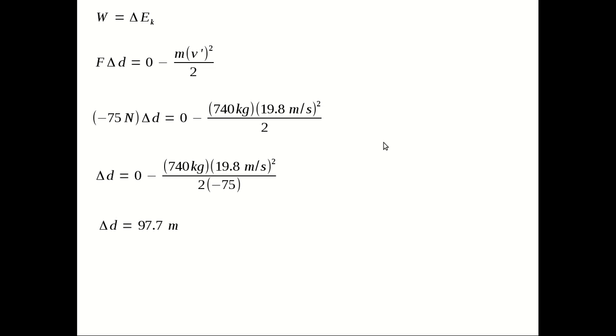And then we'll rearrange to get delta D by itself. And I get 97.7 meters. And so the cars will roll to a stop after traveling 97.7 meters beyond point B. And that's an introduction to conservation of energy.